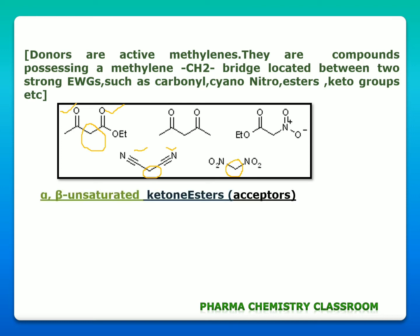Now we will see what is Michael acceptor. Michael acceptors are alpha-beta unsaturated carbonyl compounds. These examples show you alpha-beta unsaturation and a carbonyl group attached to it. So you must understand the terms Michael donor and Michael acceptor properly to understand Michael addition reaction.